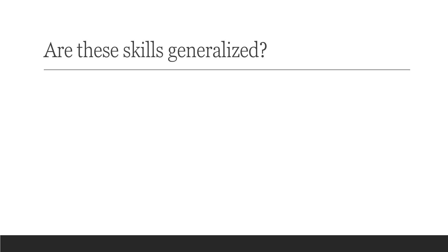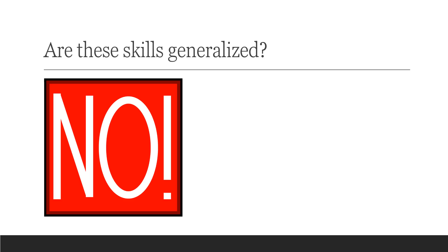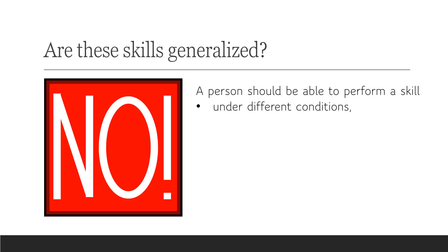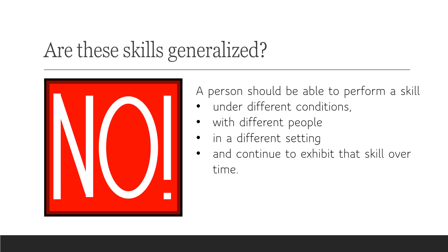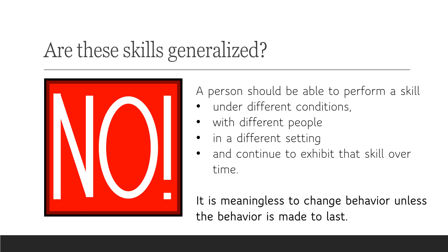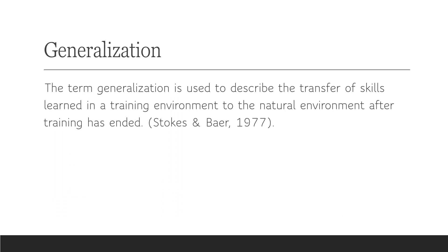Do you think that the skills are generalized in the previous examples? No, of course not. A person should be able to perform a skill under different conditions, with different people, in a different setting, and continue to exhibit that skill over time. It is meaningless to change a behavior unless the behavior is made to last. This is where generalization comes in handy. The term generalization is used to describe the transfer of skills learned in a training environment to the natural environment after training has ended.